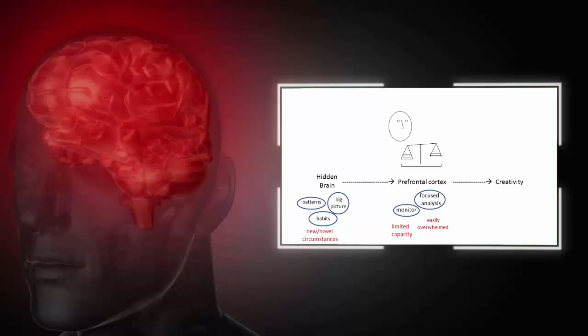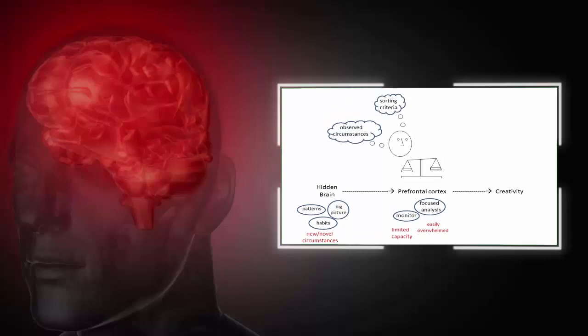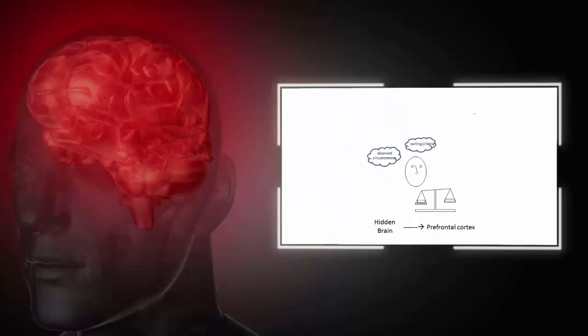So your prefrontal cortex weighs the evidence to decide on what path is more likely to lead to success. It uses the circumstances that you observe through your senses and applies its sorting criteria. These are what's most concerning at the moment, the biggest threat in front of it, and the measure of success. It uses these to make a choice, either defend the hidden brain's proposal as the best choice for success and then resist any other suggestions, or challenge it, seek a new option, another possible path that will likely be more successful. And it's doing this moment by moment.